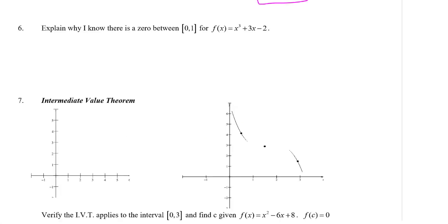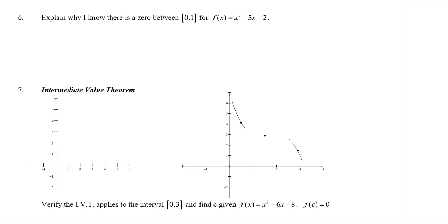Alright, so let's take a look at this question. It says, explain why I know there is a zero between, and this 0 and 1 is important to know that this is an interval. So these are our input values, which in this case, since it's f of x, these are our x values. So I know that there is a zero between x equals 0 and x equals 1 for this function.